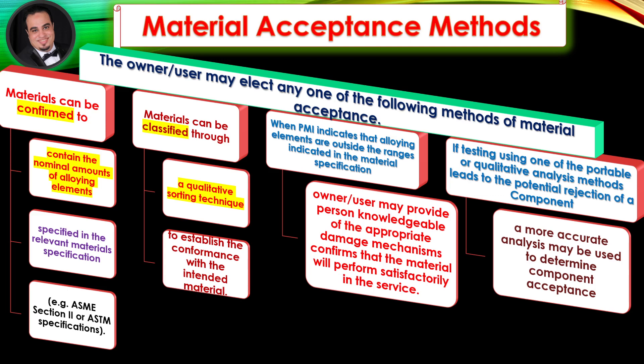Materials can be classified through a qualitative sorting technique to establish conformance with the intended material. When PMI indicates that alloying elements are outside the ranges indicated in the material specification, the owner-user may provide a person knowledgeable of the appropriate damage mechanisms to confirm that the material will perform satisfactorily in service.